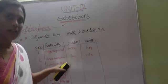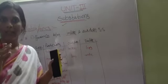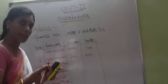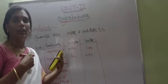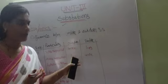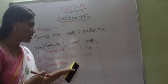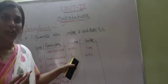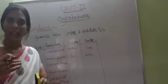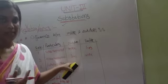The next parameter is future extension. Suppose the load increases and we have to extend our substation. Extension of the substation is easy in the case of outdoor substation, because more space is available. You can add a transformer, make connections, and extend without much problem.